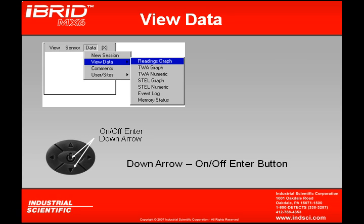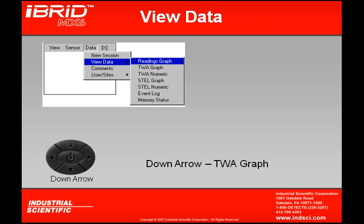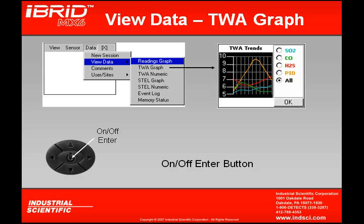From new session, by hitting the down arrow, I can bring up another option called view data. Under view data, there are seven different screens that I can view. The first one is reading graphs. The readings graph screen will show me graphically all my readings during that particular session. If I hit the down arrow, the next thing I can bring up is my TWA graph, which will show me graphically my time-weighted averages over that time period.